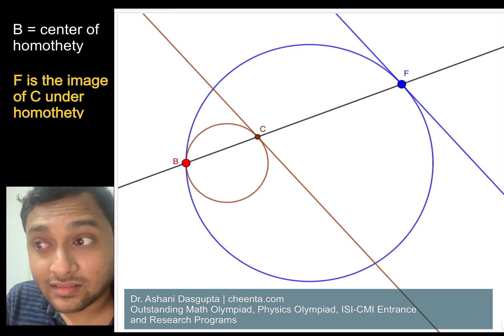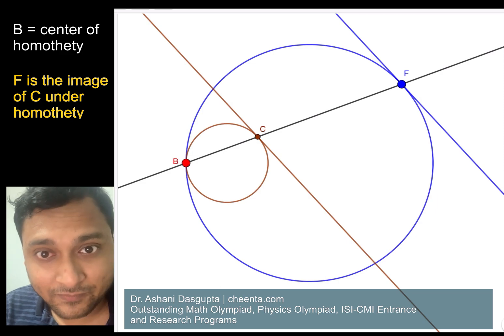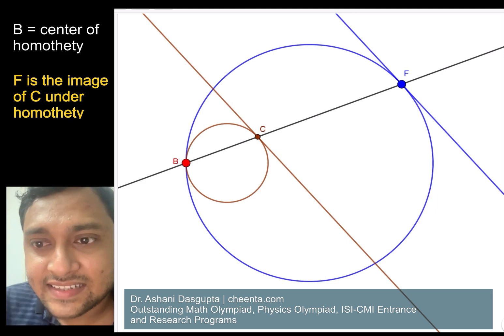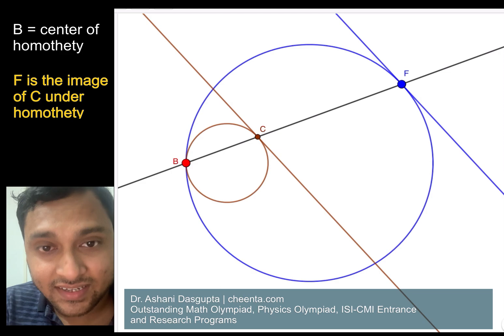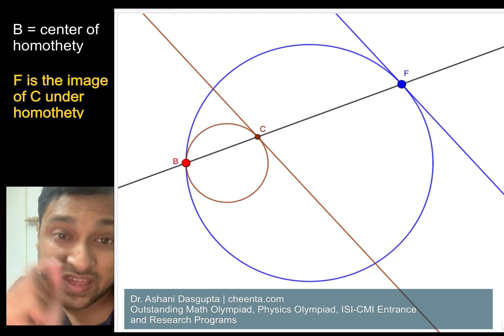Okay, so that's great. So we understand what homothety is doing - it's just growing a small circle into the large circle, and many of the things related to the small circle are becoming things related to the big circle.